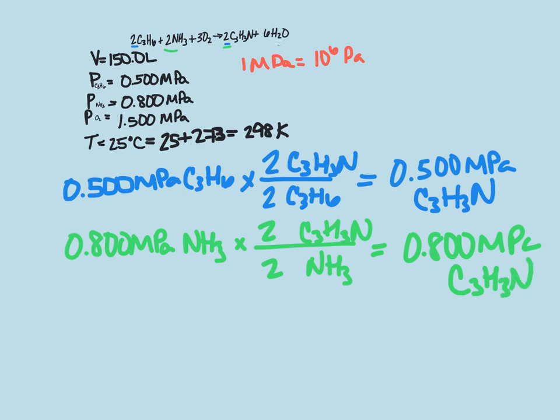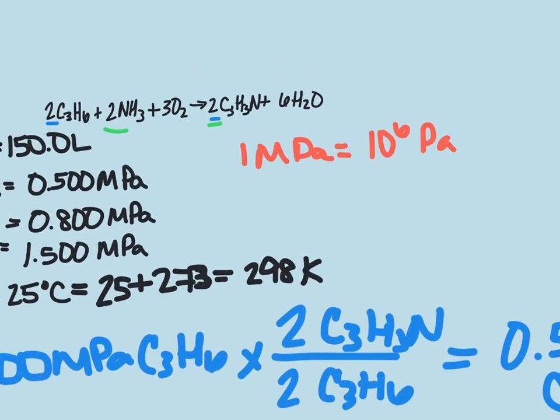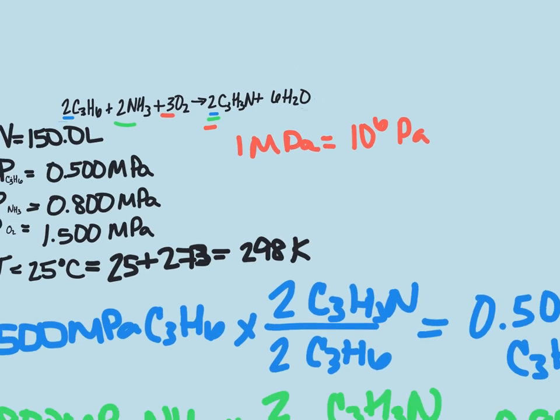Finally, our last one is going to be the oxygen. So we have 1.50 megapascals of O2. Then we're going to do the molar ratio for that. Looking up here, we see that it's actually 3 to 2.